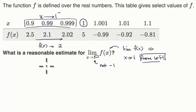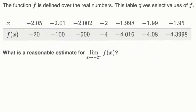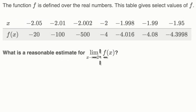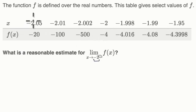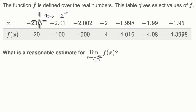Let's try another example. Here there does look like a reasonable estimate for the limit as we approach this value from the left. Now the function f is defined over the real numbers. This table gives select values of f. What is a reasonable estimate for the limit as x approaches negative 2 from the left? You see two negative signs here: the first tells us we're approaching negative 2, and we're going to approach from the left. Lucky for us, they have values of x approaching negative 2 from the left.